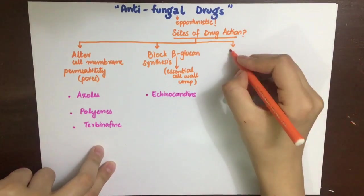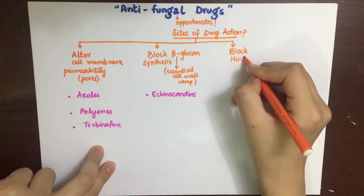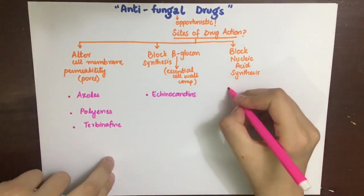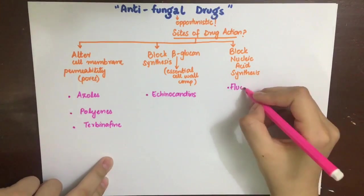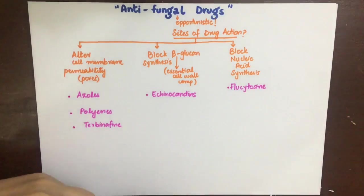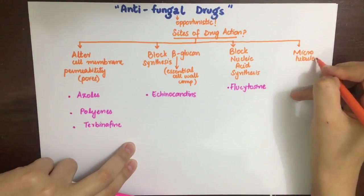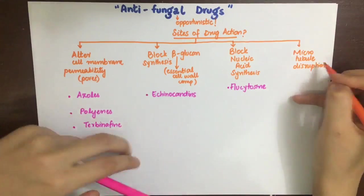Still other drugs can block nucleic acid synthesis by acting as antimetabolites, which are substances that inhibit cell growth by competing with a natural substrate in an enzymatic process. These drugs include flucytosine.